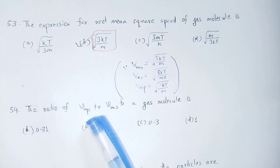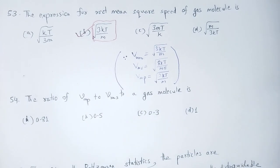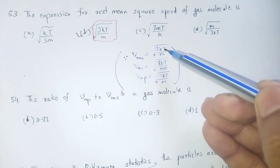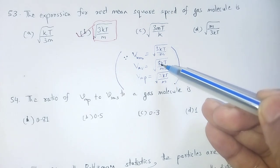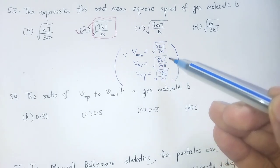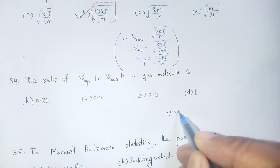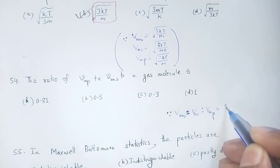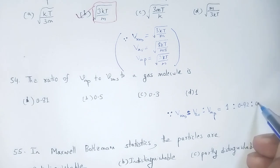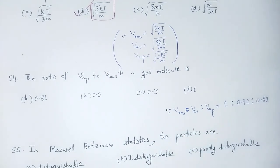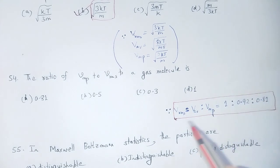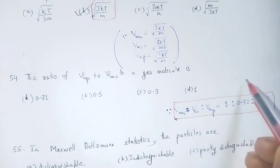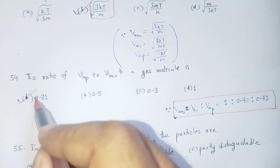Question 54: The ratio of v_most_probable to v_rms for a gas molecule. v_rms is √(3kT/m), v_mp is √(2kT/m). The ratio of v_rms to v_average to v_most_probable is 1 to 0.92 to 0.81. So v_most_probable to v_rms is 0.81. Option number A: 0.81.